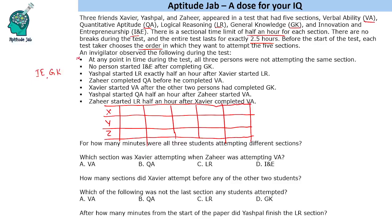Yashpal started LR exactly half an hour after Xavier started LR. So wherever Xavier has LR, the next slot will be LR in the case of Yashpal.